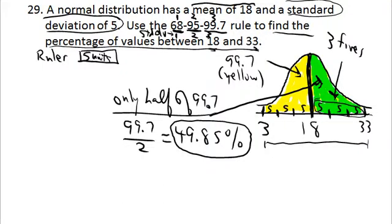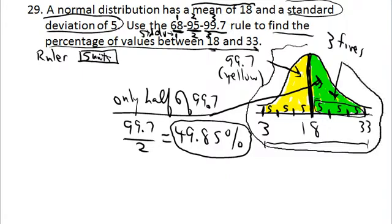This is a recipe-type process: read the problem, extract the important data, and start sketching. It doesn't have to be beautiful or super accurate. Once you have a general sketch, take the standard deviation and use it as a ruler to count how many standard deviations lie between the mean and the value they're asking about, then think it through step by step.